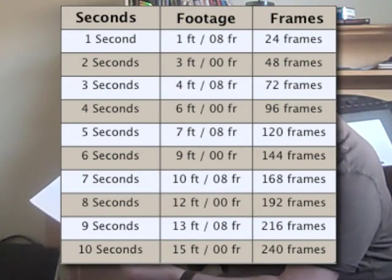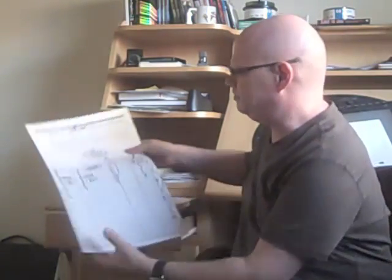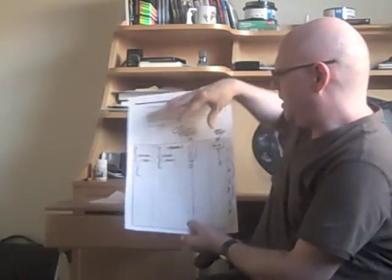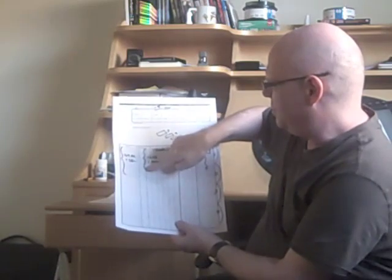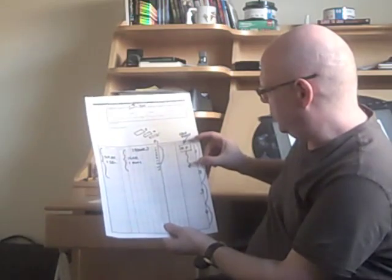We've given you a little chart that you can look at with all the various conversions. One second equals 24 frames, which is one foot and 8 frames. Two seconds is 48 frames, which is three feet. It's like a conversion chart for seconds, frames, and feet — just a couple of handy conversions that make your life a little easier. On your X sheet as well, you've got 16 frames to a foot, and it's usually broken down with divisions at eight-frame intervals so you can easily figure out your footage.